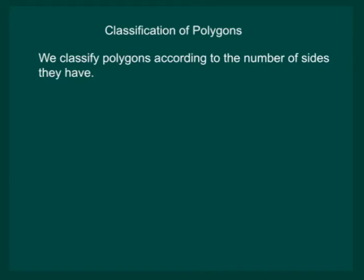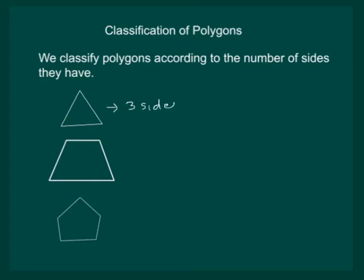For example, look at the first figure. It has three sides or we can say it has three vertices. Vertices are the points where the sides meet. So we can see there are three vertices and we name it as triangle.